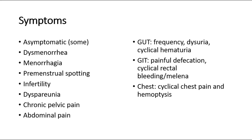Overall, symptoms that might be found in endometriosis include: some patients may be asymptomatic, while others experience dysmenorrhea, menorrhagia (heavy menstrual bleeding), premenstrual spotting, infertility, dyspareunia, and chronic pelvic or abdominal pain. Other system-specific symptoms include genitourinary symptoms such as frequency, dysuria, or cyclical hematuria; gastrointestinal symptoms such as painful defecation or cyclical rectal bleeding or melena; and chest symptoms such as cyclical chest pain and hemoptysis. The cyclical nature means that symptoms occur every month during menstruation, with pain or bleeding recurring each cycle.